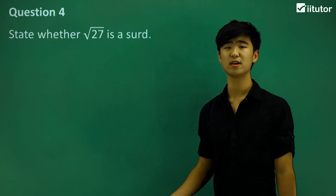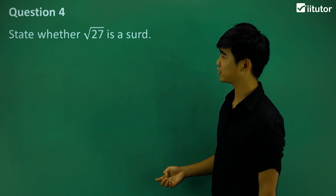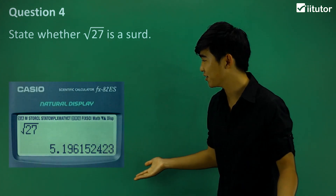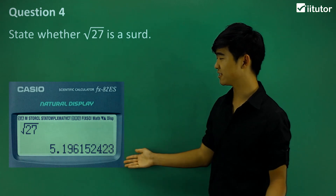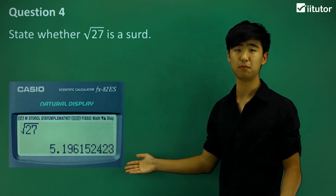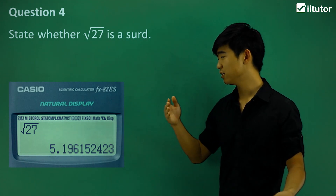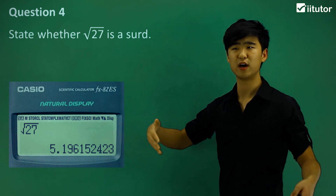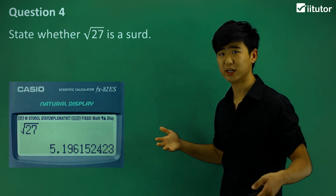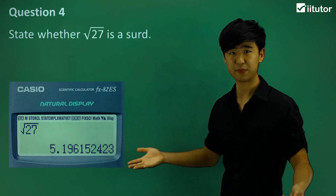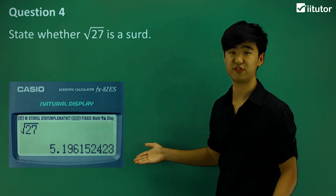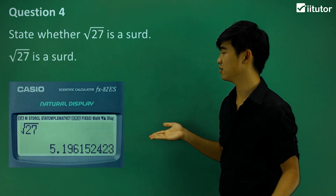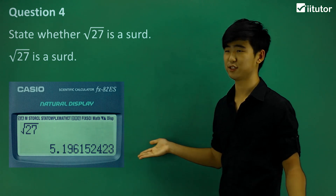We have: state whether the square root of 27 is a third. First thing we should do is just put it into our calculator, and we have this long decimal number. Yes, it's endless — this is going on forever. Now, is it non-recurring? In other words, does it have a specific pattern? No, it doesn't look like it has a specific pattern. So this one, we can say it's a third. The square root of 27 is a third.